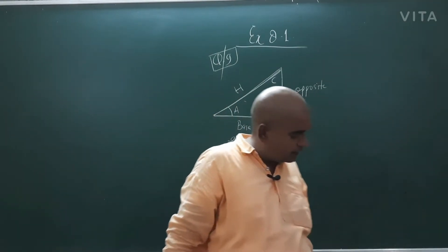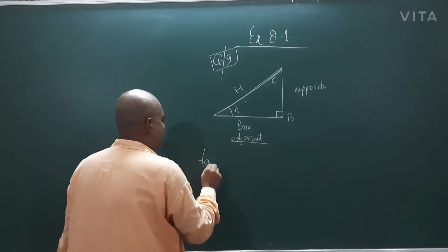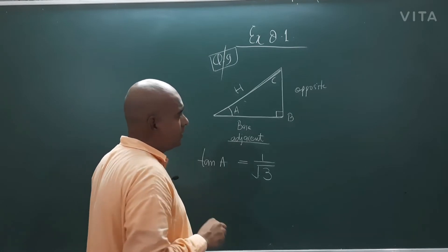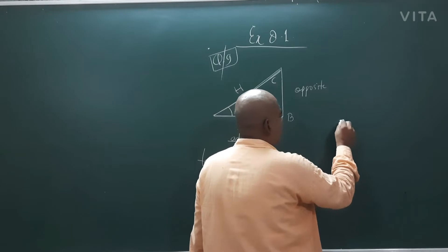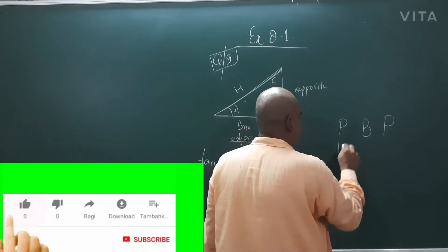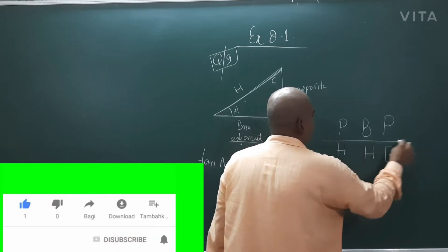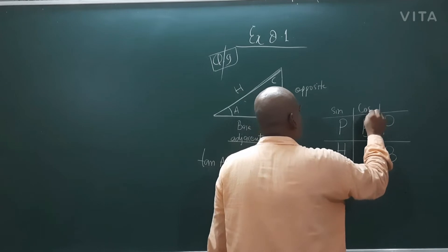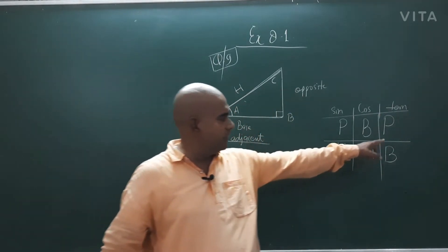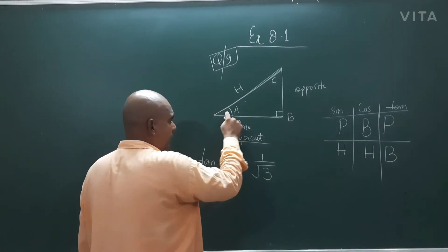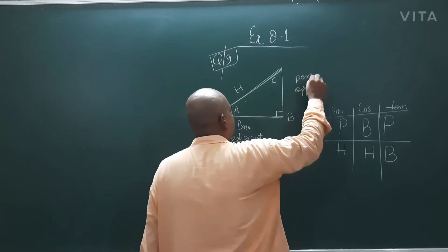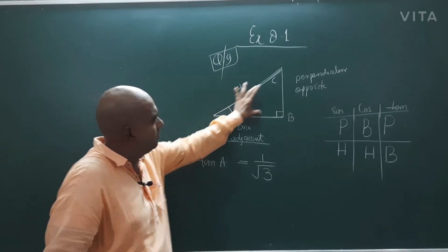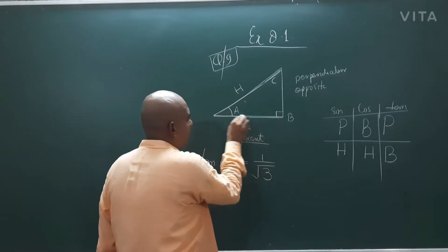It is given tan A is equal to 1 upon root 3. For this you need to know the definitions — the mnemonic: Pakistan Bhokha Piyasa, Hindustan Bhara Bhara — sine, cosine and tan. So tan means perpendicular by base. For this angle A, this is perpendicular or opposite, and this is the base. The story for C will be different.